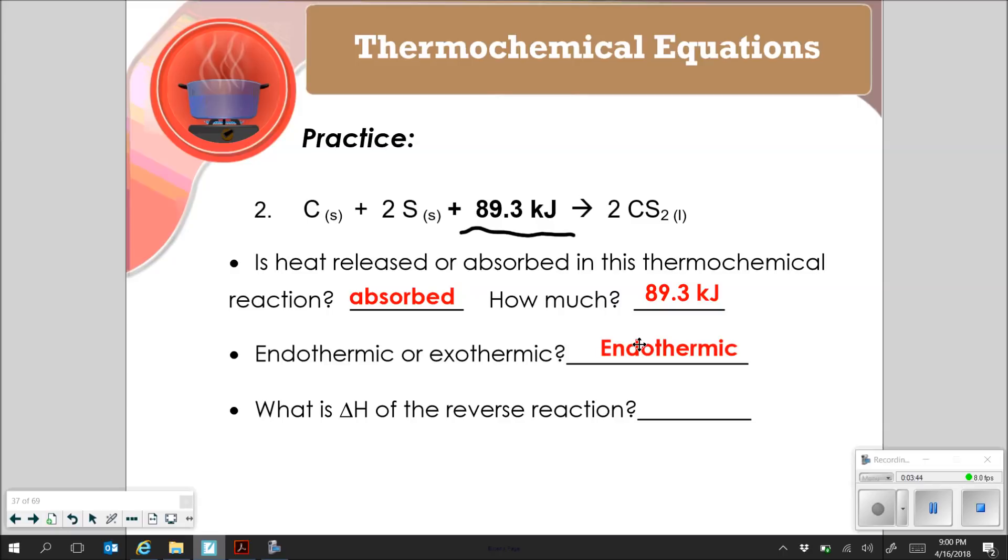The last question on this one says, what is the change in H or the enthalpy of the reverse reaction? So if I'm going to write the reverse reaction, I'm actually going to write it out in reverse. If I had 2CS2 going to carbon plus my sulfur plus 89.3 kilojoules. So in this case now, if I look at my reverse reaction, my 89.3 kilojoules is actually now a product. And as we said in the previous slide, if you've got 89.3 kilojoules as a product, it's going to be exothermic. So my change in H is going to be negative 89.3 kilojoules. Note that I made it negative when I took it out of the equation. It's not negative in the equation. It's positive because it's a reactant. But when you take it out and you put it by itself, you have to specify.